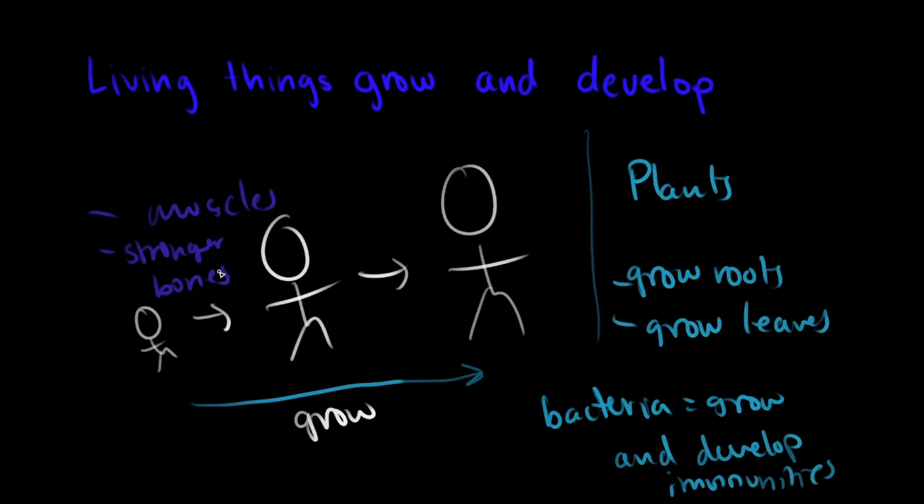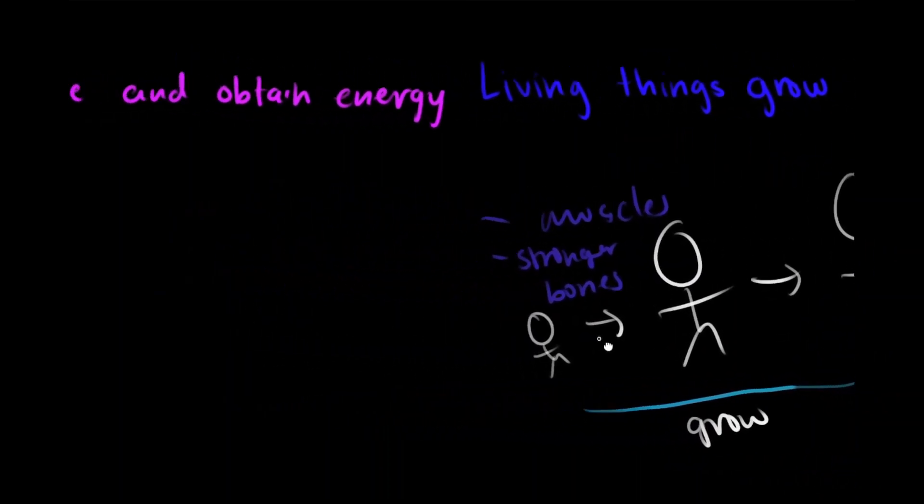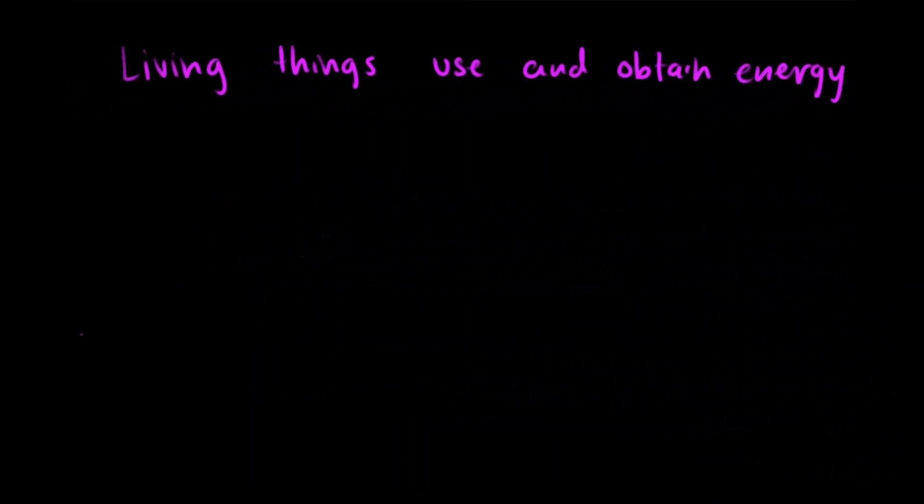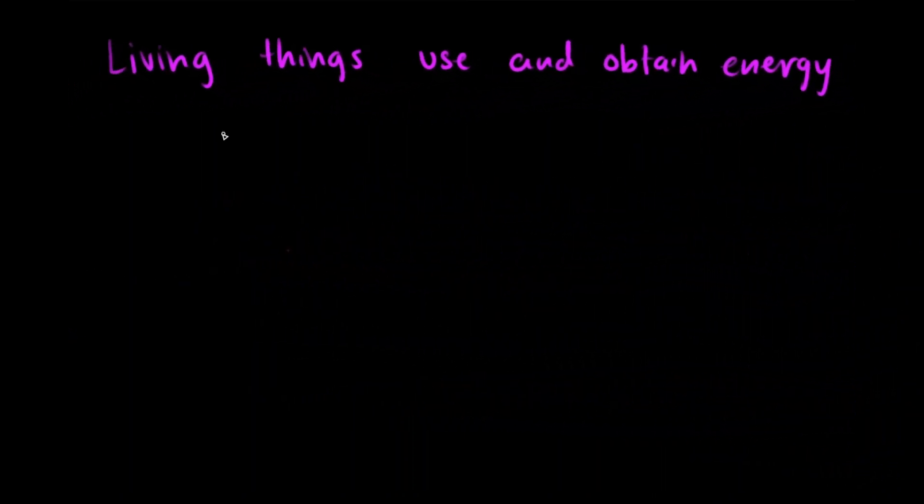We're almost there. Just a couple more to go. The third to last characteristic of life is that living things use and obtain energy. Us humans love to obtain energy in the form of food. We eat to obtain energy. That apple you eat is taken in as chemical energy held in the bonds of its sugars.